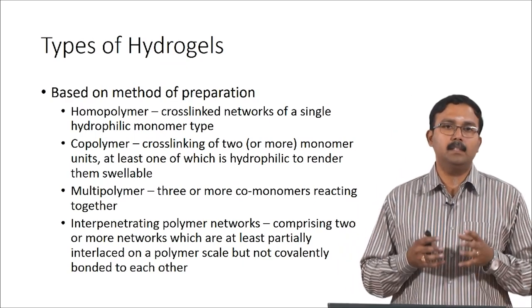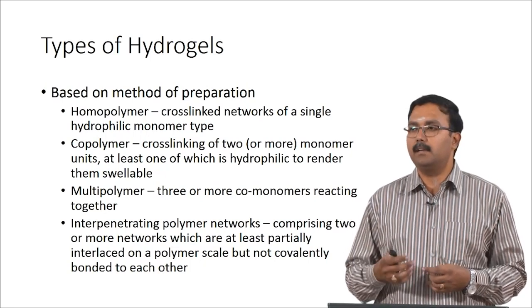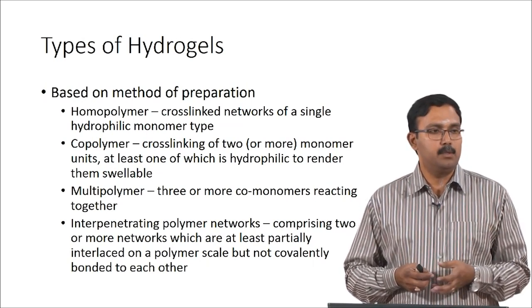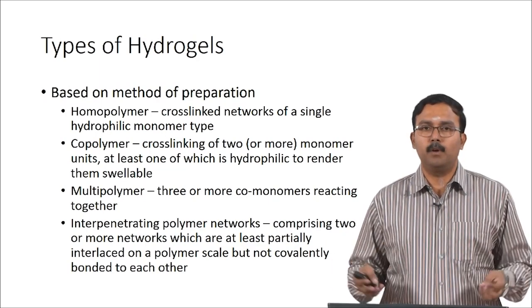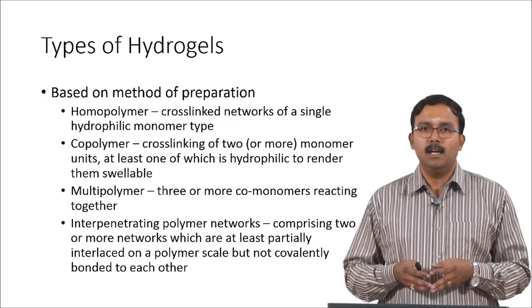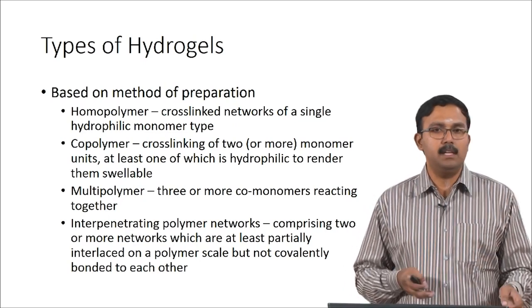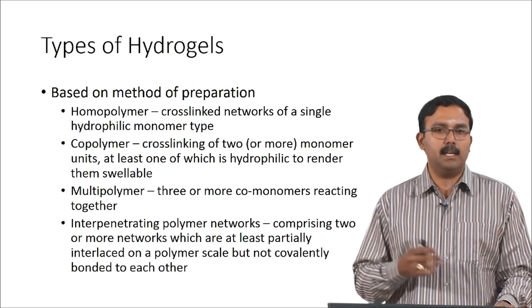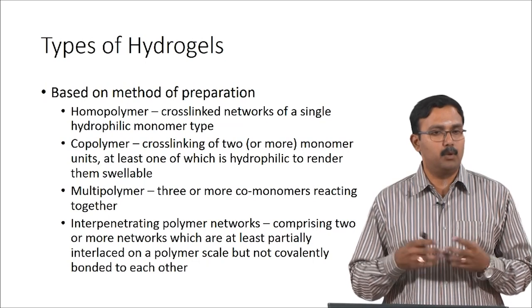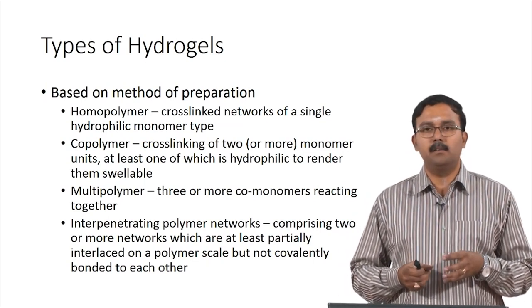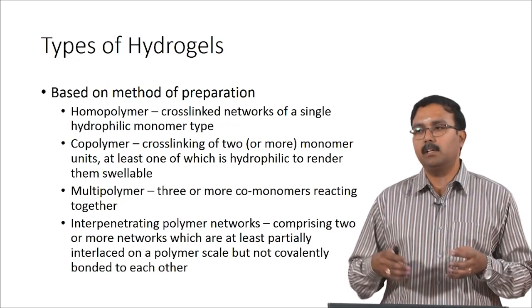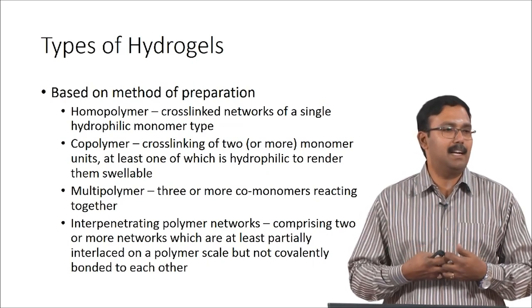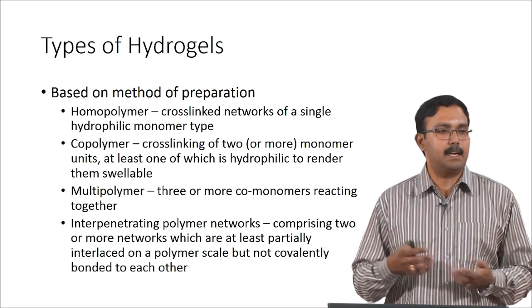Based on the method of preparation, hydrogels can be classified as homopolymer, copolymer, multipolymer, or interpenetrating polymer network hydrogels. Homopolymers use a single type of hydrophilic monomer crosslinked to prepare the hydrogel. Copolymers use two or more monomeric units, while multipolymers use at least three or more comonomers reacting together. Interpenetrating polymer networks are slightly different — the first polymer network is formed initially, and the second network is formed following the initial network. The two networks are not covalently attached to each other; they just interact with each other, which is why it is called an interpenetrating polymer network.